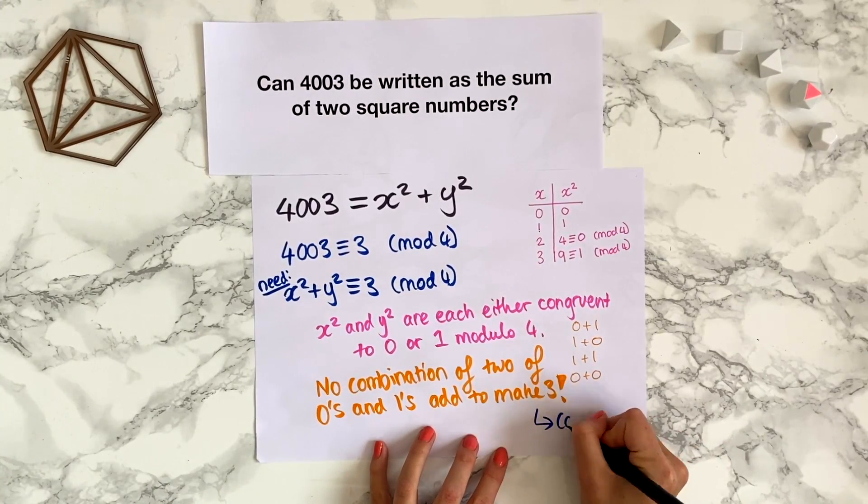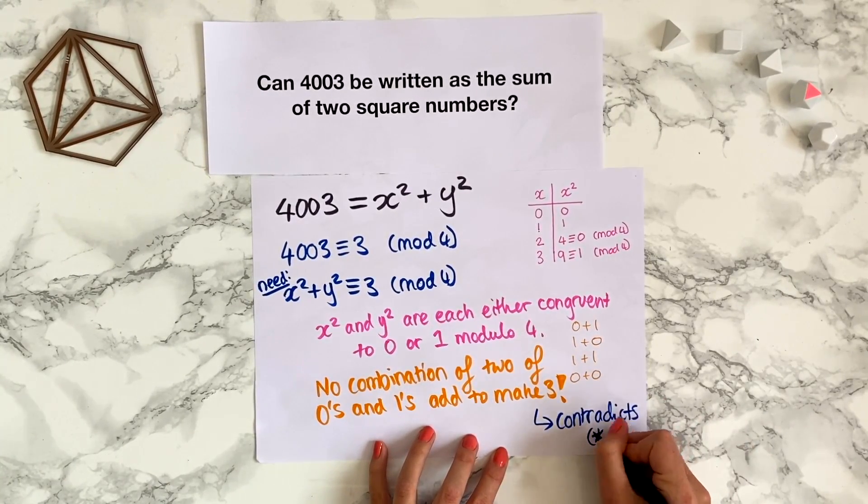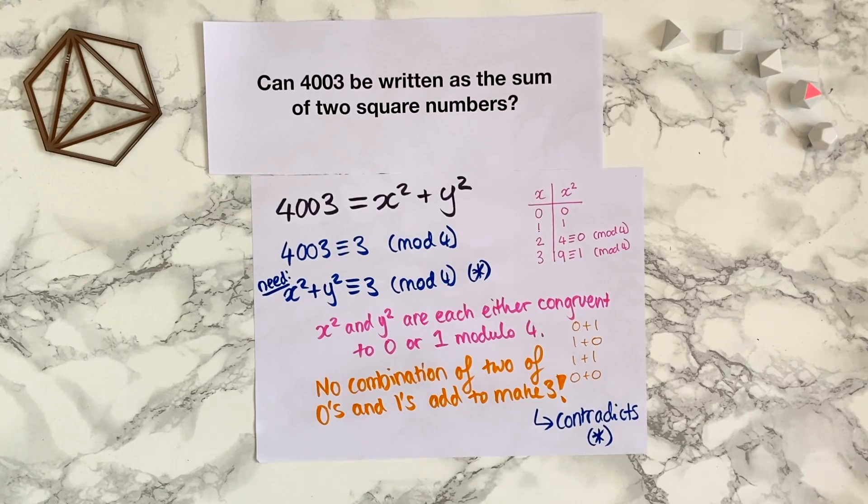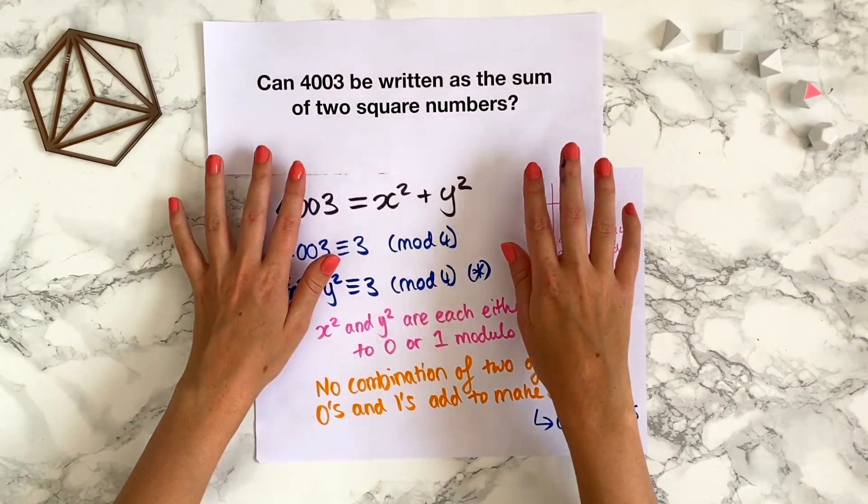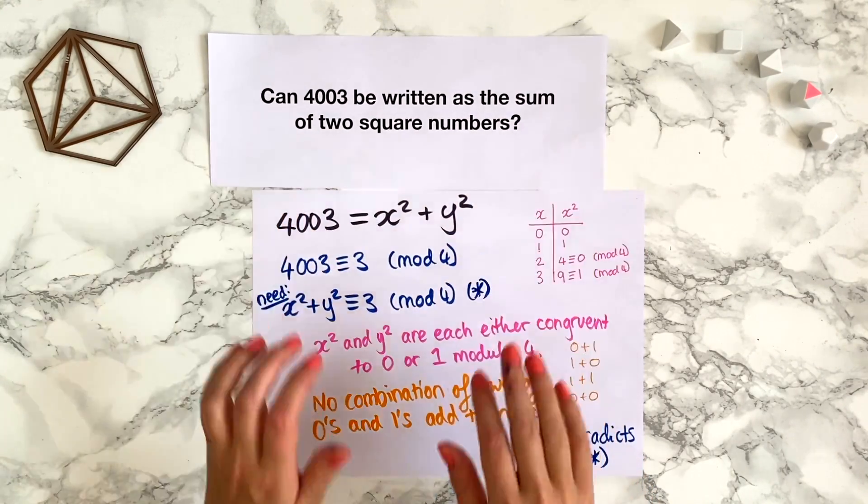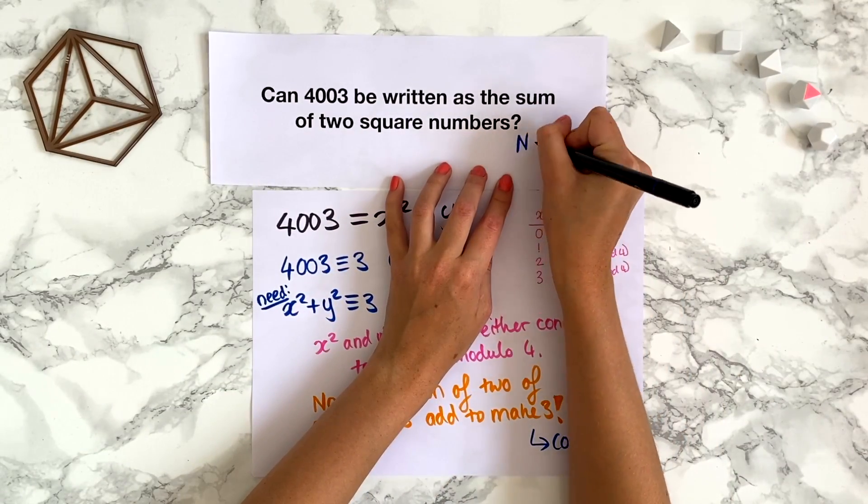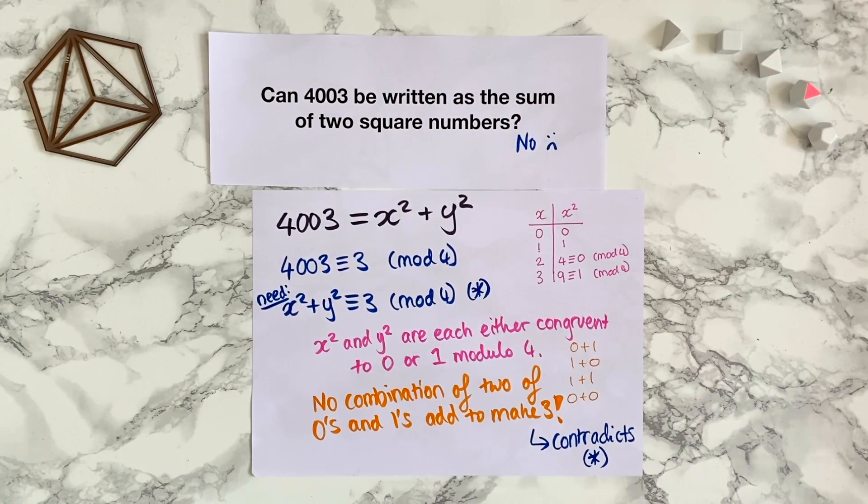So we've reached a contradiction, which shows it's therefore impossible to write 4003 as the sum of two square numbers.